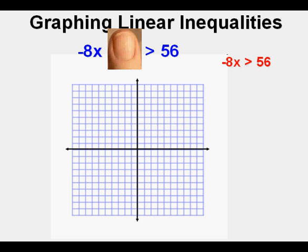First, cover the y term, leaving negative 8x is greater than 56. We solve for x by dividing both sides by negative 8. Since 56 divided by negative 8 equals negative 7, and since we divided by a negative number, the sign switches, giving x is less than negative 7. We place a point on the x-axis at negative 7.